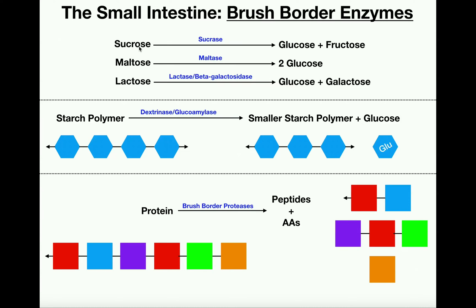Sucrose is a disaccharide of glucose and fructose. The enzyme that degrades sucrose is aptly named sucrase, and it breaks sucrose down into glucose and fructose, which can be absorbed. Maltose is a disaccharide of two glucoses, so maltase degrades it into two glucose monomers. Lactose is a disaccharide of glucose and galactose — the enzyme lactase, also seen in some literature as beta-galactosidase, degrades lactose into glucose and galactose. These are disaccharidases, enzymes that degrade disaccharides, present in the brush border membrane.